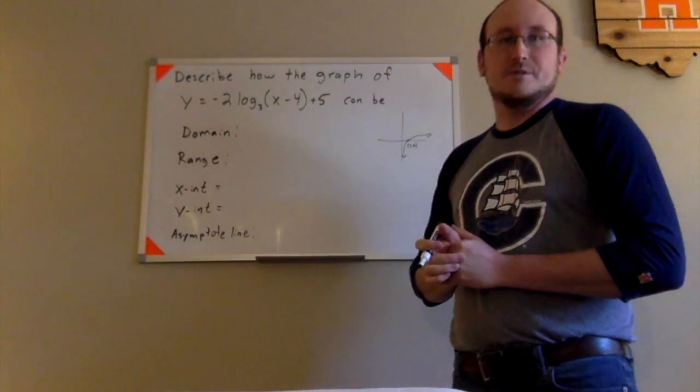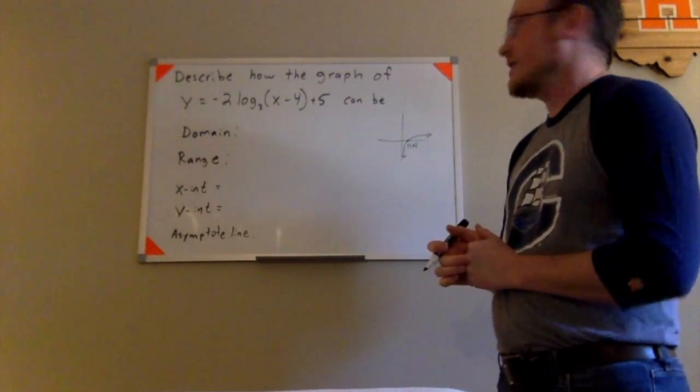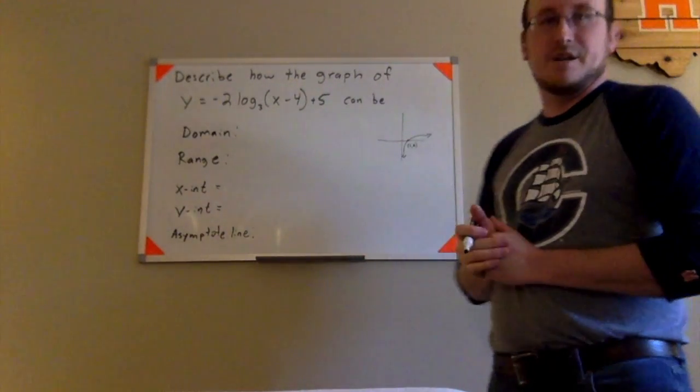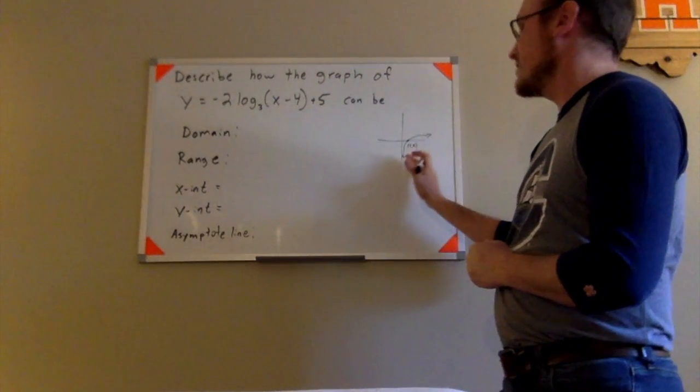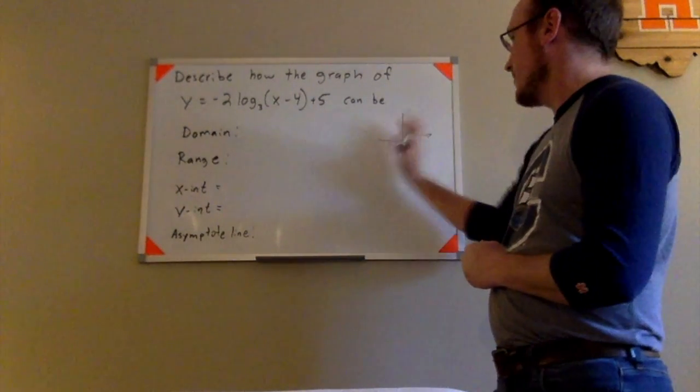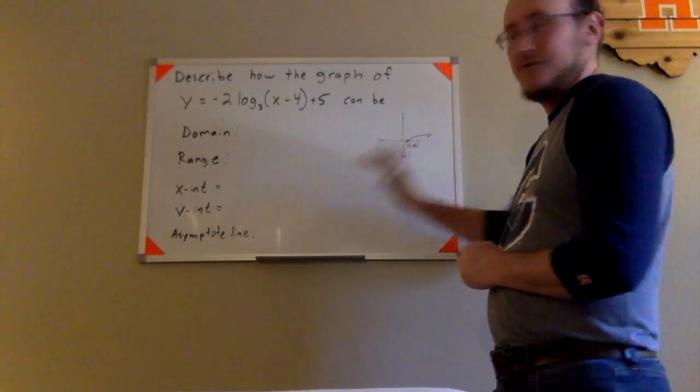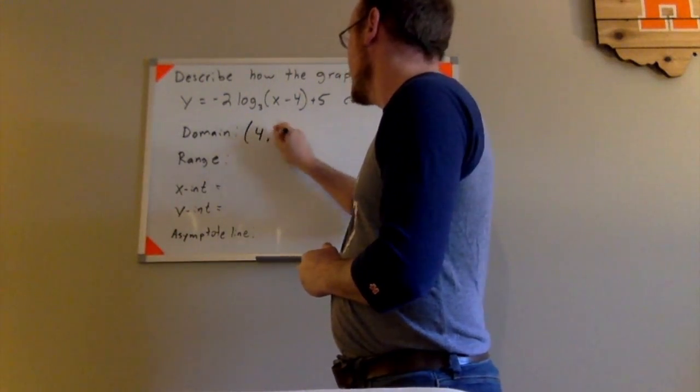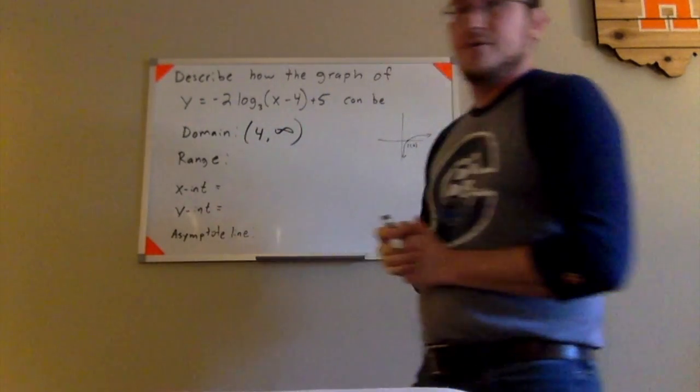For the first transformation that we talked about, that horizontal translation of 4 units to the right actually will affect the domain. The domain of the original function log base 3 of x was from 0 to infinity, so if I move that 4 units to the right, this would be from 4 to infinity for that domain.